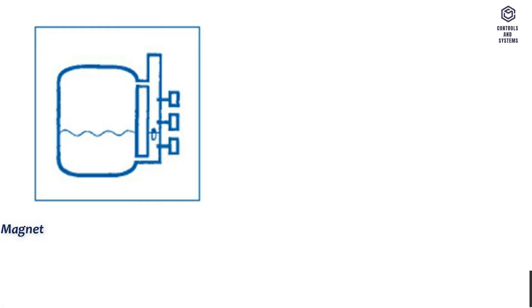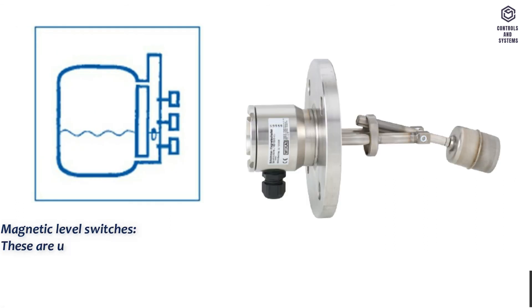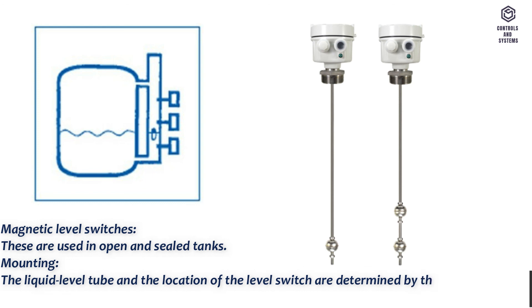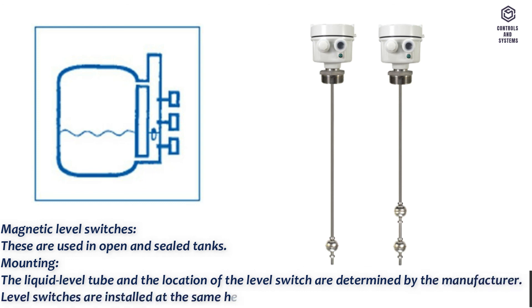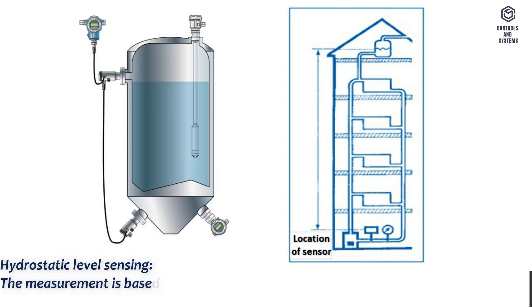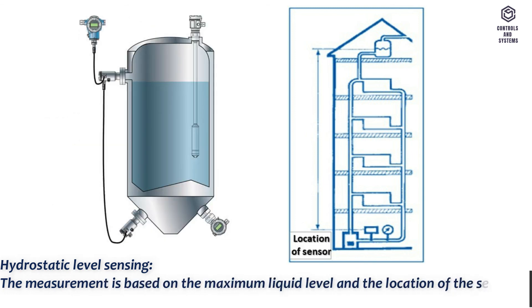Magnetic level switches are used in open and sealed tanks. Their positions are determined by the manufacturer, and level switches are installed at the same height as the required liquid level. For hydrostatic level sensing, the measurement is based on the maximum liquid level and the location of the sensor.